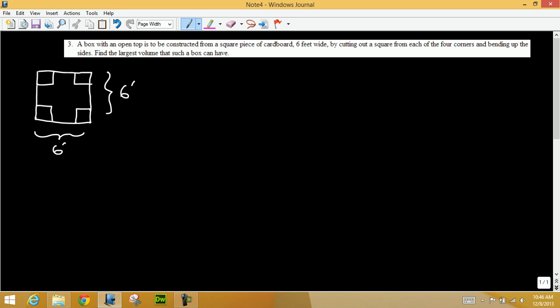In this question, a box with an open top is to be constructed from a square piece of cardboard six feet wide. So we have a square piece of cardboard six feet by six feet, and by cutting out a square from each of the four corners and bending up the sides.